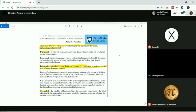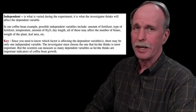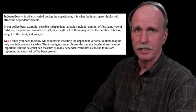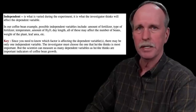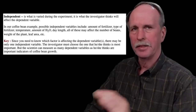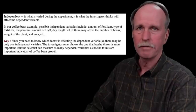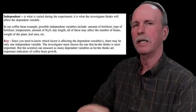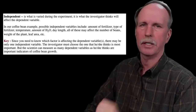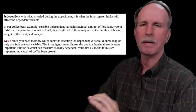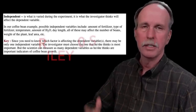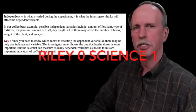Here is Penn State University telling you that the independent variable is what is varied during the experiment — it's what the investigator thinks will affect the dependent variable. I'll give you that particular one — it doesn't say they've got to do it themselves. And Riley, you're absolutely right. That's why I chose your first citation as the example of what an independent and dependent variable is. This citation that you offered clearly states the investigator can choose the independent variable. There's nothing in there about the investigator personally manipulating it. So once again, your citations come around and bite you.